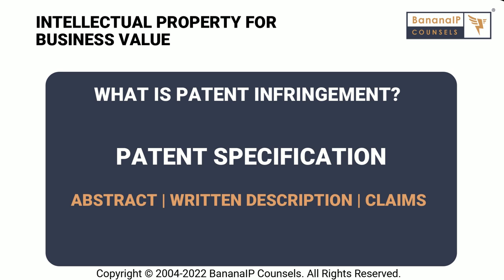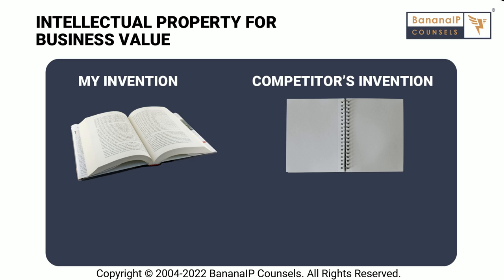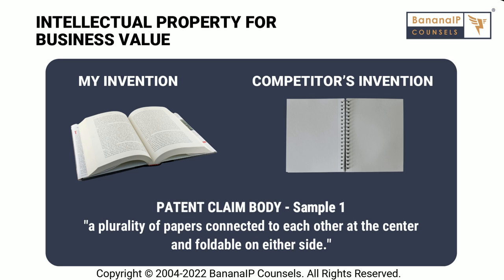Now let's look at an example on how this works. Let's say I have invented this book — that's my invention. Now, one of my competitors is copying and making those spirally bound books. Would he be liable for infringing my patent? For that, you need to know what I have written in my patent as a claim. I would like you to read the claim, look at that spirally bound picture, and tell me if that spirally bound book falls within the scope of this claim or not.